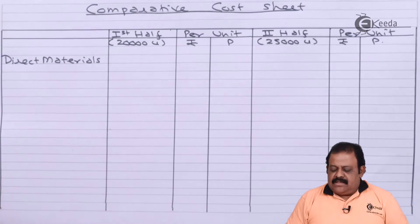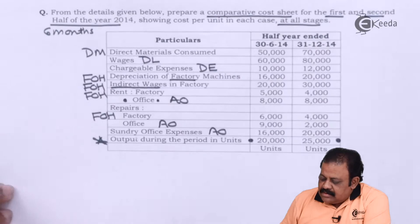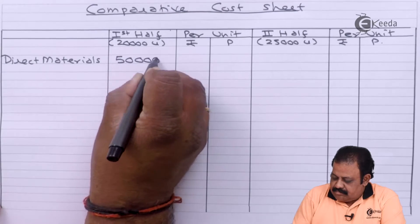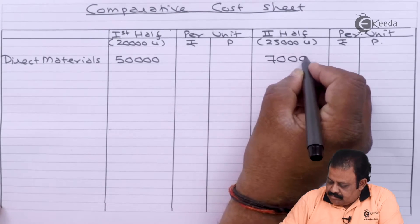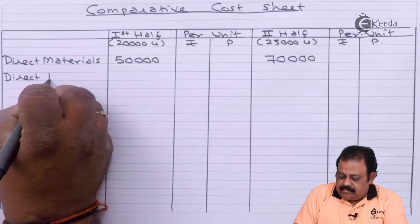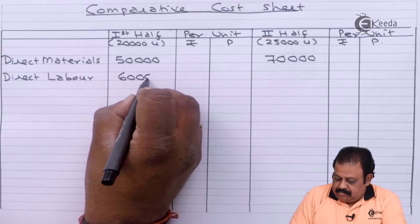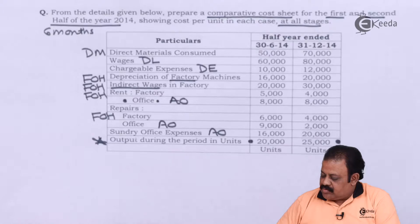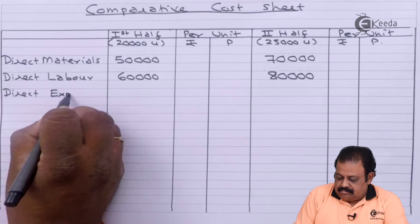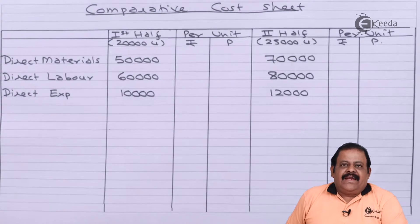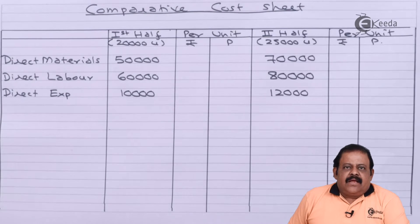Direct materials: first half ₹50,000, second half ₹70,000. Chargeable expenses: first half ₹10,000, second half ₹12,000. We have direct material, direct labor, and direct expenses — adding these gives us the prime cost.